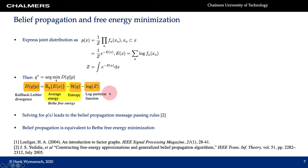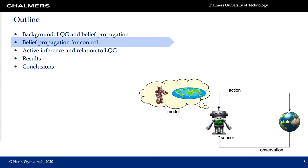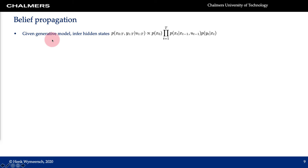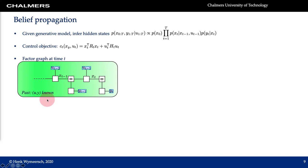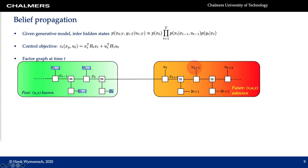With this background in mind we can now move on to the relation between belief propagation and control. We assume we have a generative model and want to infer hidden states. We determine the joint distribution of states and observations given the controls, which due to the Markov assumption factorizes as the prior times the dynamic model times the observation likelihood. At time t the factor graph has a part related to the past — with known past controls and observations up to time t — and a part related to the future, containing unknown future controls and unobserved future observations.